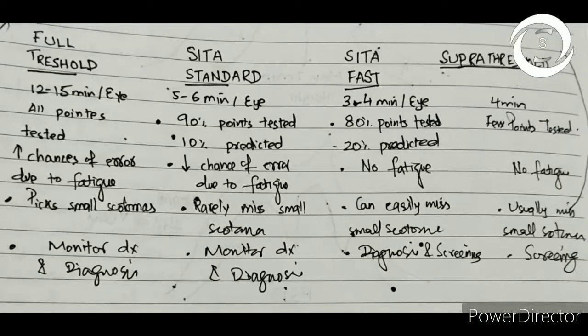SITA standard takes six to eight minutes per eye and its results are comparable to full threshold, whereas SITA fast takes three to four minutes. In full threshold, all points in the area are tested. In SITA standard, 90 percent of the points are tested, and if normal, rest 10 percent will be assumed to be normal. SITA fast tests 80 percent of the points, and if assumption follows a standard pattern, it will not test the remaining 20 points.